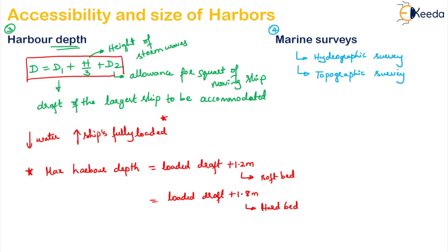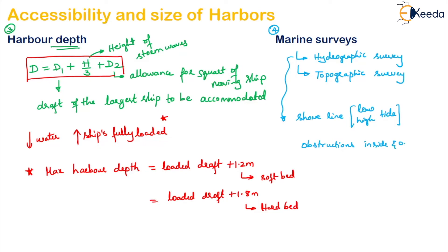The hydrographic survey consists of locating the shoreline at low and high tide level, and the positions of structures or obstructions in the water and along the shore. The depth of the sea bottom is obtained by use of a fathometer or echo sounder designed for hydrographic survey. Readings are taken at intervals of 7.5 metres along range lines 15 to 30 metres apart, depending on the nature of the bed and the extent of detail required.